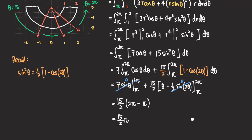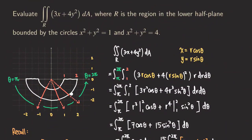So our final answer is 15π/2. This is a typical problem for setting up a double integral in polar coordinates because the region is circular. If you were to set it up in rectangular coordinates, you'd need to break the region into three parts and deal with many square roots, which would make the calculation much harder. That's it for this problem — if you liked this video, please share and subscribe to my channel. See you next time!